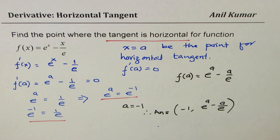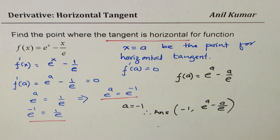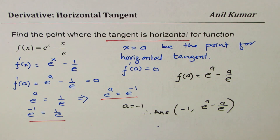So I hope the concept is clear. What we learned here is that the slope of a horizontal tangent line is 0. A curve could have more than one point where the tangent is horizontal — as seen in the first example with trigonometric functions. Feel free to write your comments and share your views. If you like and subscribe to my videos, that would be great. Thank you and all the best.